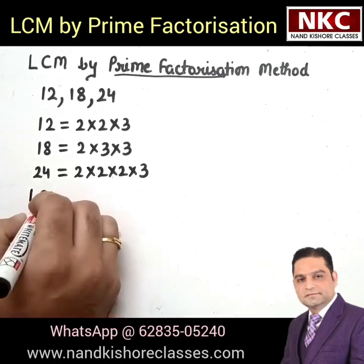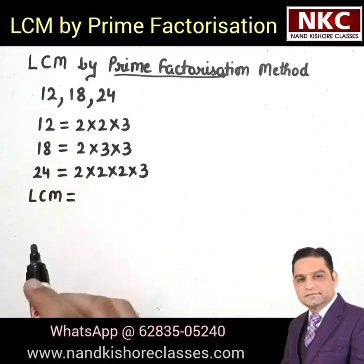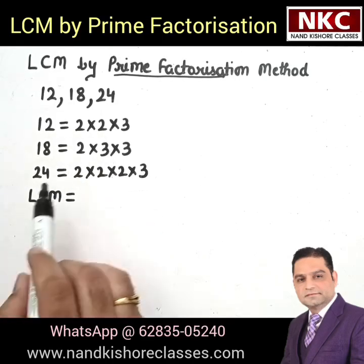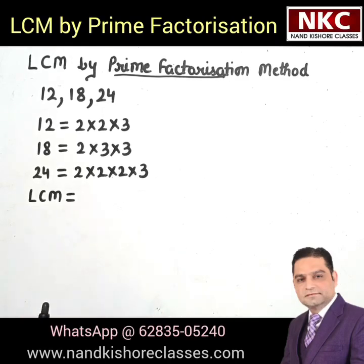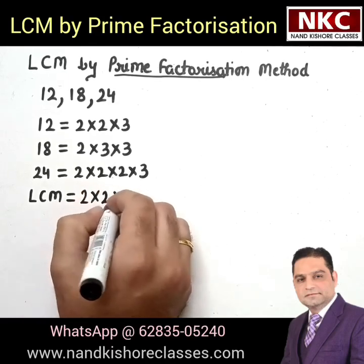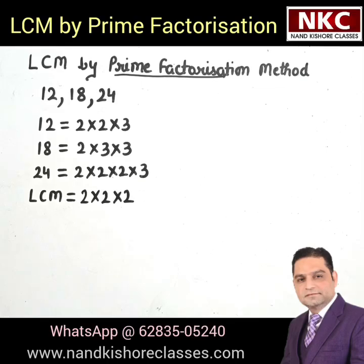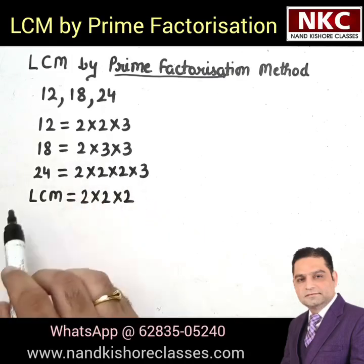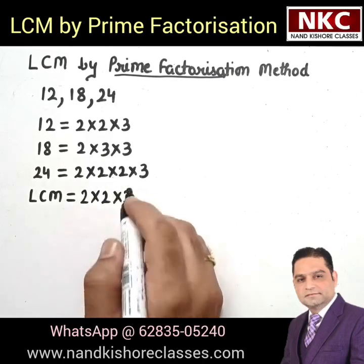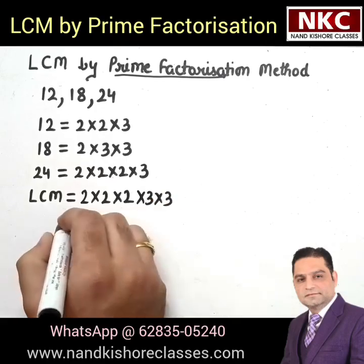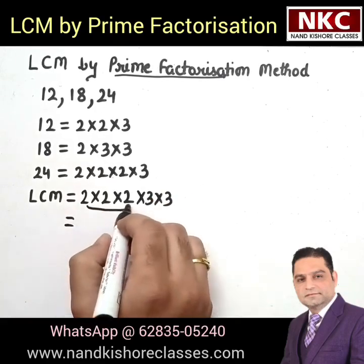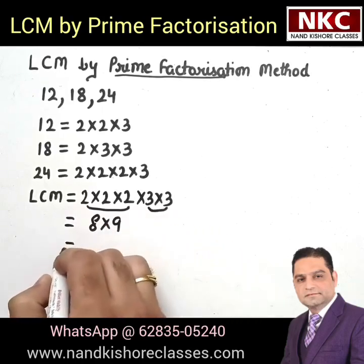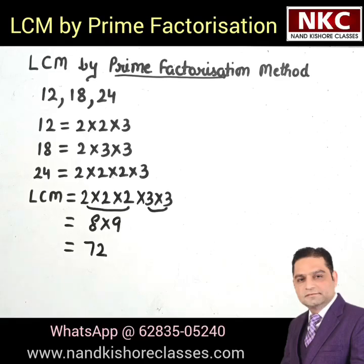Now let us find the LCM. For 2: it is coming 2 times in 12, 1 time in 18, and 3 times in 24. The highest count is 3, so write 2 three times. For 3: it is coming once in 12, twice in 18, and once in 24. The highest is 2 times, so write 3 two times. The answer is 2×2×2 = 8, and 3×3 = 9, giving 8×9 = 72. So LCM of 12, 18 and 24 is 72.